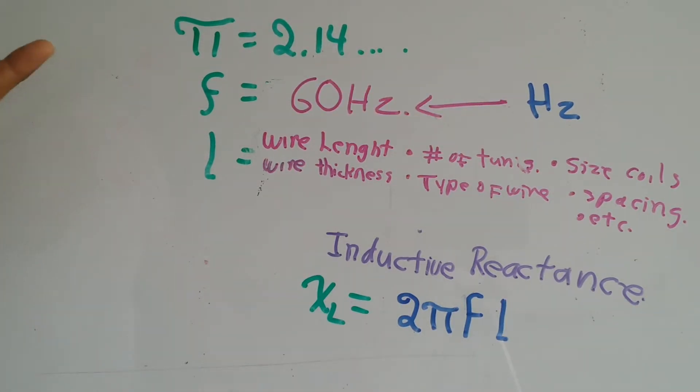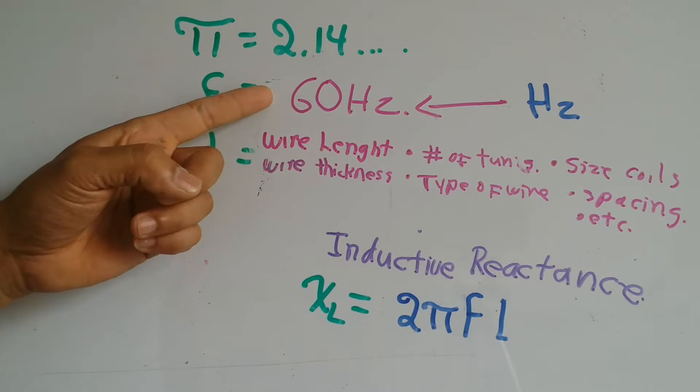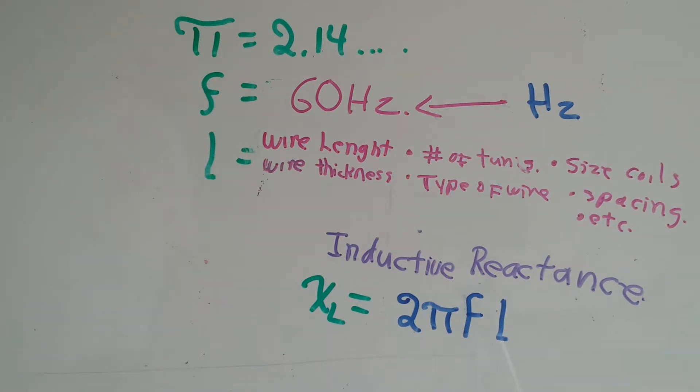Frequency for our regular distribution systems in the U.S. and on board ships will always be 60 Hertz, unless there is a special frequency which is also given to you.